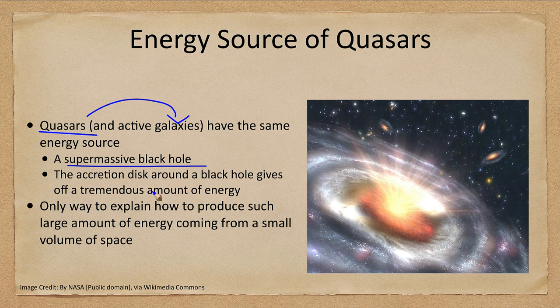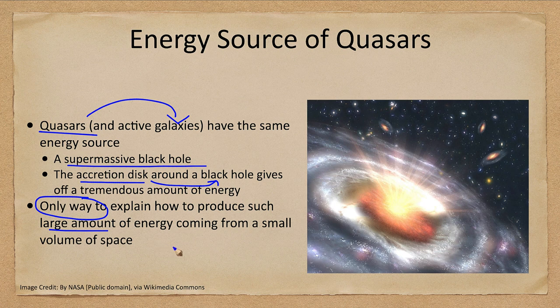It's not the black hole itself but the accretion disk around the black hole that gives off a tremendous amount of energy. This is the only way to explain how to produce such a large amount of energy from such a small volume of space. In the early history of the universe, supermassive black holes were accreting a lot more material than they do today, giving rise to the extremely energetic quasars.